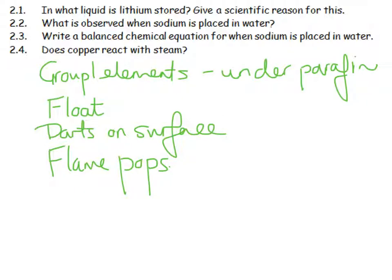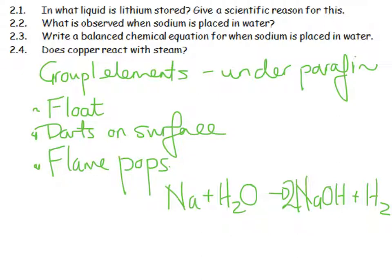Write a balanced chemical equation for when sodium is placed in water. Sodium in water. Any metal plus water is going to give me the metal hydroxide plus hydrogen gas. And then we double check whether it is balanced. And it looks like we are going to have to put a 2 over there. And then a 2 there. And then a 2 there.